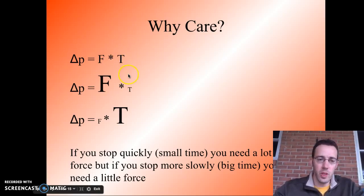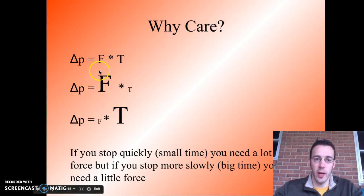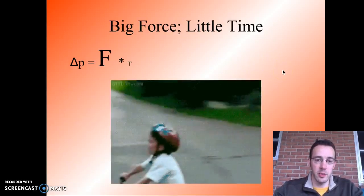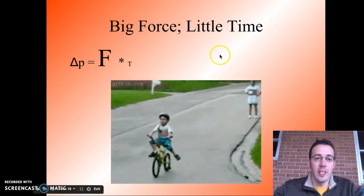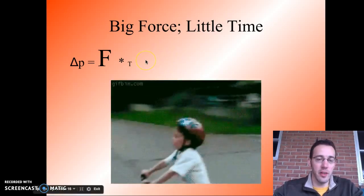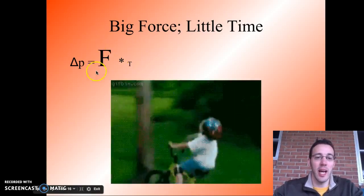Why does the impulse-momentum theorem matter? If in a collision the time it takes for objects to be in contact is small, the force acting on you has to be really, really big. Here's an example: a kid is moving along and hits a pole. His momentum changes from moving to stopped, and because he stopped very, very quickly, the time was very small — which means the force acting on him to stop him had to be very, very large. That tends to make for not a particularly good day.